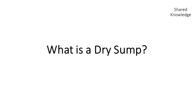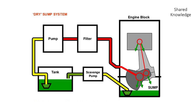A dry sump is a lubricating oil management design for piston engines which uses an external or secondary reservoir to store oil. The oil sits at the bottom of the engine crankcase, and a scavenge pump pulls the oil out to an external reservoir — a tank. From there, a pressure pump pushes the oil through the filter and around the engine to the bearings and all lubrication and cooling points.